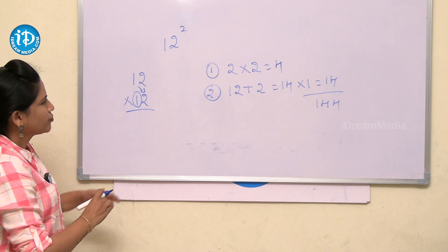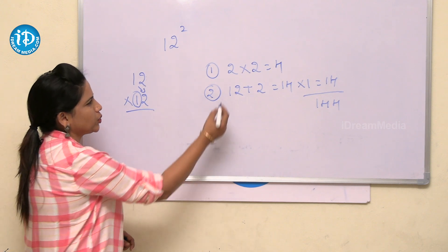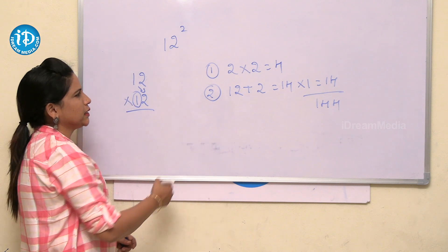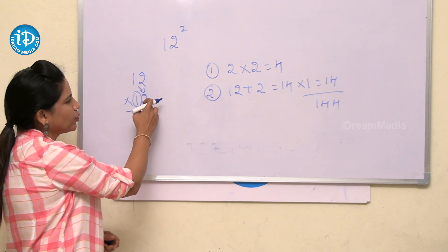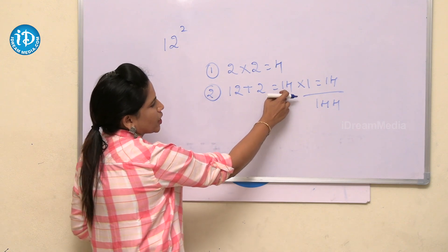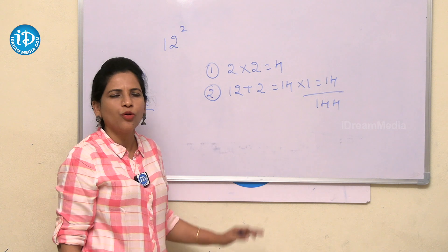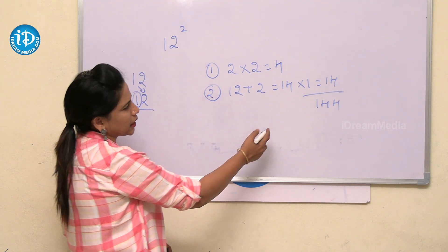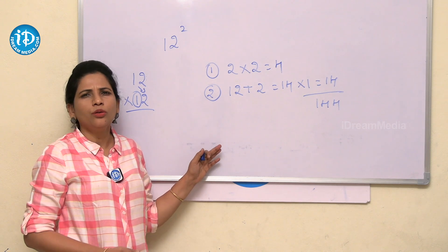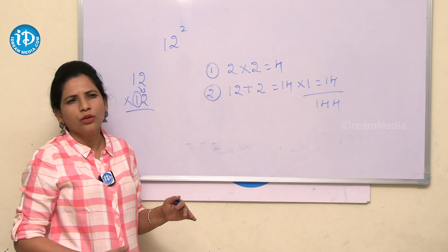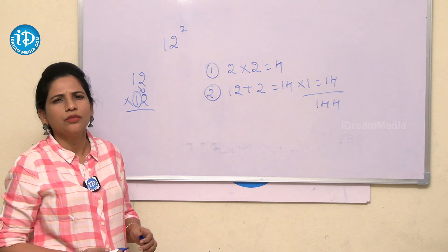To explain once more: for 12 square, first we do the unit digit multiplication — 2 into 2 is 4. In the second step, we take 12 and add the unit digit 2 to get 14, then multiply 14 into 1 to get 14. So the answer is 144. This sum took hardly one minute to calculate. I request all of you to follow these steps and solve sums very quickly and easily.